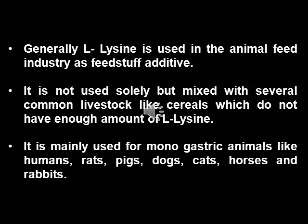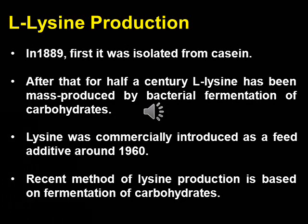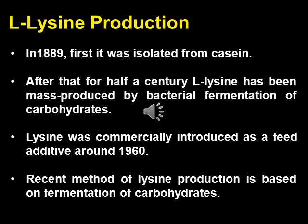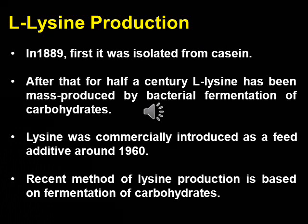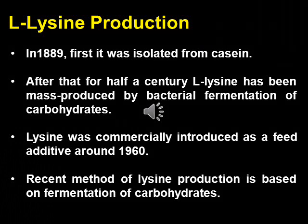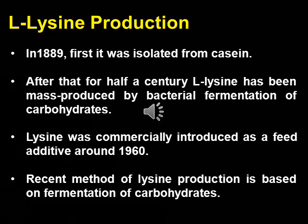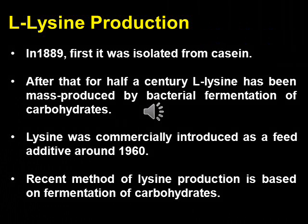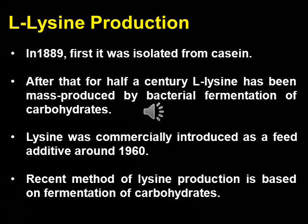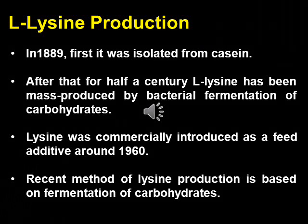There are various chemical and biochemical methods available for L-lysine production. One can choose the method whichever is more economic. Historically, L-lysine was first isolated from casein in 1889. After that, for half a century, L-lysine has been mass-produced by bacterial fermentation of carbohydrates. Around 1960, L-lysine was commercially introduced as a feed additive. The recent method of lysine production is based on fermentation of carbohydrates like beet and cane sugar or starch sugars.